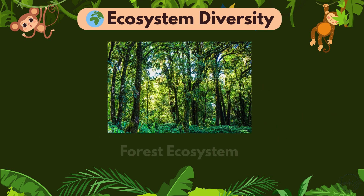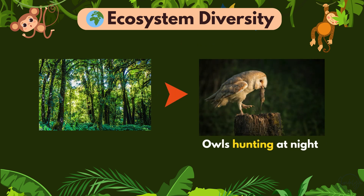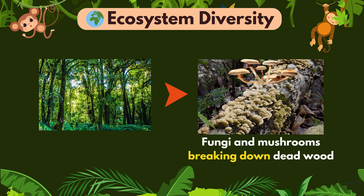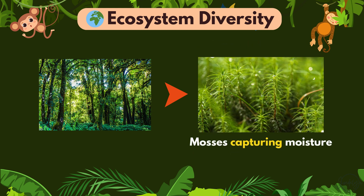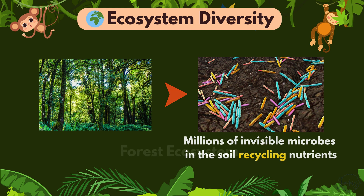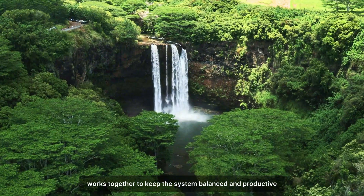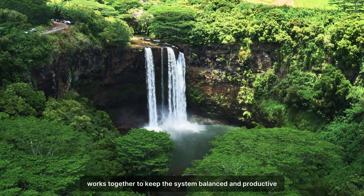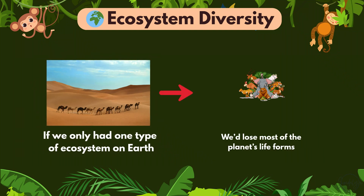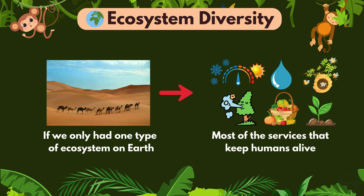Take a forest ecosystem — it's not just trees and animals. It's a complex web of owls hunting at night, wolves managing prey populations, fungi and mushrooms breaking down dead wood, mosses capturing moisture, and millions of invisible microbes in the soil recycling nutrients. Each layer of this ecosystem, from the canopy to the forest floor, works together to keep the system balanced and productive.